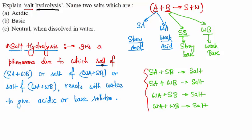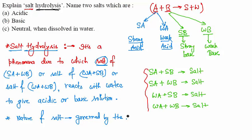Whether the solution will be acidic or basic depends on the salt — specifically which type of acid or base it is made from. Always remember: the nature of the salt, whether acidic or basic, will be governed by the strongest part. The nature of the salt will be governed by the stronger part.